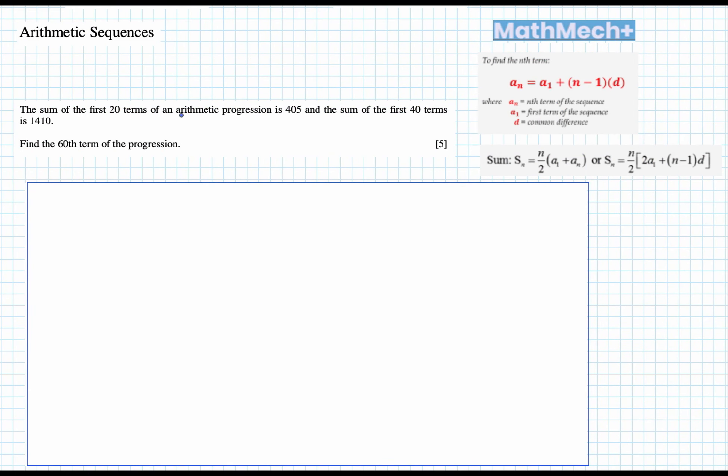Sum of the first 20 terms of an arithmetic progression is 405, and the sum of the first 40 terms is 1410. Find the 60th term of the progression.